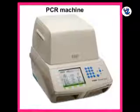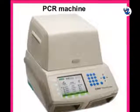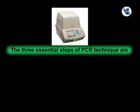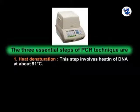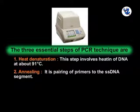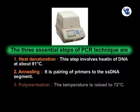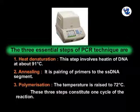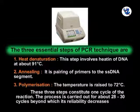The vast majority of PCR methods use thermal cycling — alternately heating and cooling the PCR sample. The three essential steps of the PCR technique are: first, heat denaturation — heating of DNA at about 91 degrees Celsius; second, annealing — pairing of primers to the single-stranded DNA segment; third, polymerization — the temperature is raised to 72 degrees Celsius. These three steps constitute one cycle of the reaction. The process is carried out for about 28 to 30 cycles, beyond which its reliability decreases.